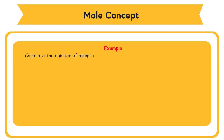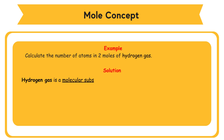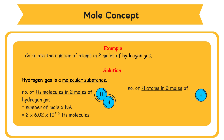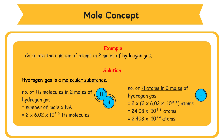Example: Calculate the number of atoms in 2 moles of hydrogen gas. Solution: Hydrogen gas is a molecular substance. 1 mole of hydrogen gas has 6.02 × 10²³ H₂ molecules. The number of H₂ molecules in 2 moles = 2 × 6.02 × 10²³. Each H₂ molecule is made up of 2 H atoms. Therefore, the number of H atoms = 2 × 2 × 6.02 × 10²³ = 24.08 × 10²³ = 2.408 × 10²⁴ atoms.